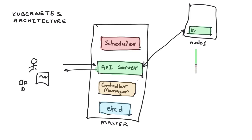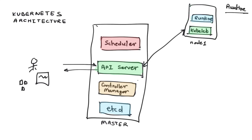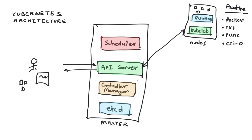Now let's look at what components run on the nodes. Every node participating in the cluster and responsible for running containers runs a process called kubelet. Kubelet is the agent of that Kubernetes cluster — it talks to the API server, then talks to the container runtime and gets the job done. The runtime is typically a container daemon like Docker, but Kubernetes also works with Rocket by CoreOS, runc, or CRI-O, which is the newer runtime closely integrated with Kubernetes.